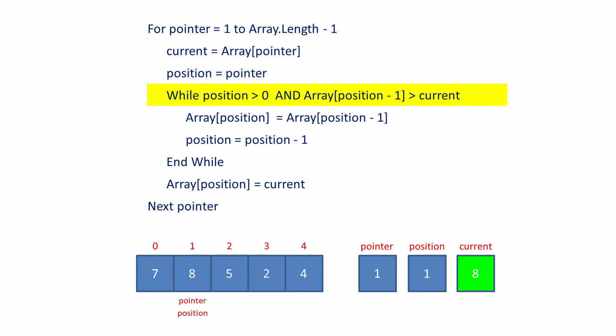A test is made to see if position is bigger than zero. If so, there are still some items in the sorted section that need to be compared with the current item. The same test also asks if the item given by position minus 1 is bigger than the current item. In this case, if 7 is bigger than 8. 7 is not bigger than 8, so the inner loop exits immediately.